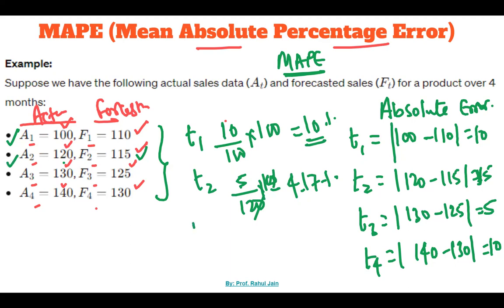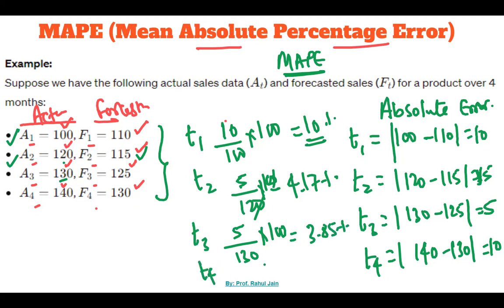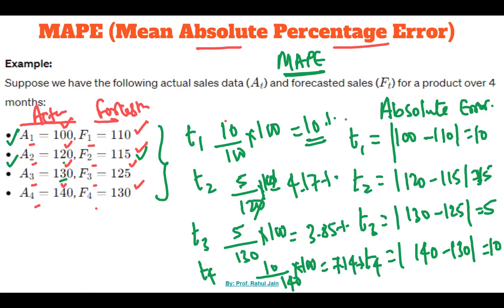In month three, the difference between actual value and forecasted value is 5, divided by the actual value 130, multiplied by 100. So the percentage error here is 3.85 percent. In month four, the difference is 10 and the actual value is 140, multiplied by 100, giving 7.14 percent. So we have now calculated the absolute error and the percentage error for all four months.